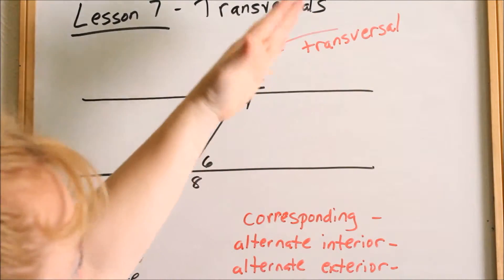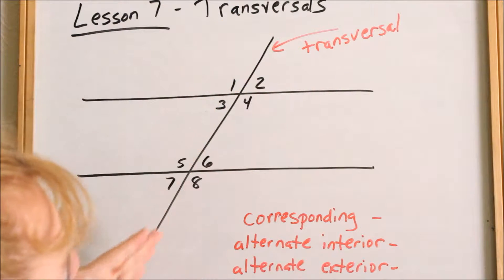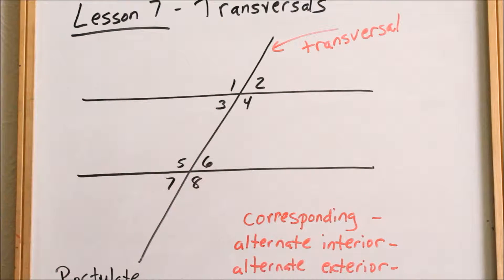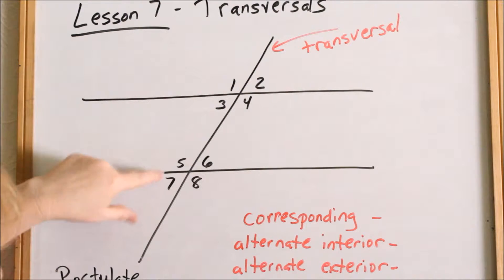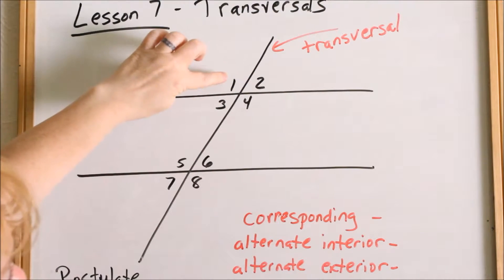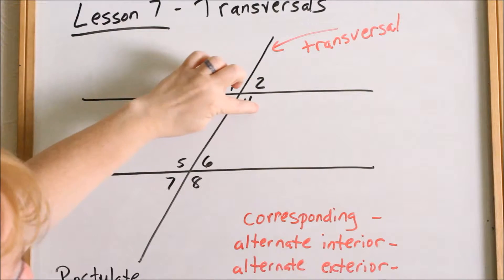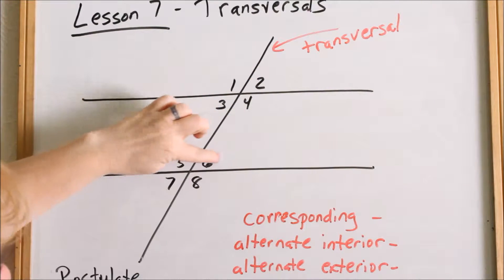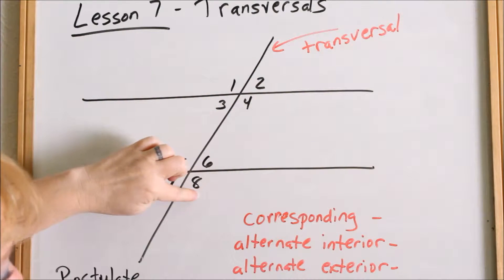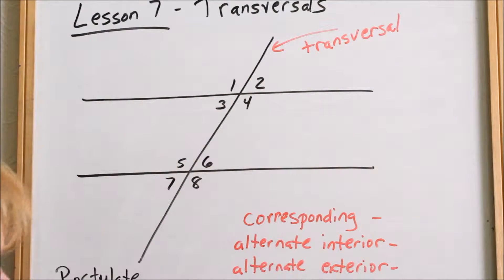Transversal just means it goes across. When you have a transversal going across two parallel lines, you've created one, two, three, four, five, six, seven, eight angles.